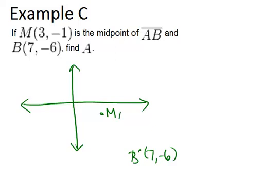Let me just label in the (3, -1). And I'm trying to find A, which I know should be somewhere over here, because it has to be on the other side of the midpoint.